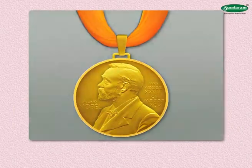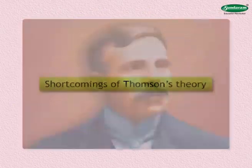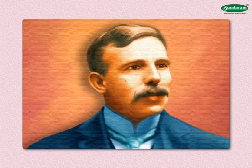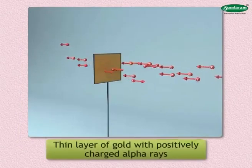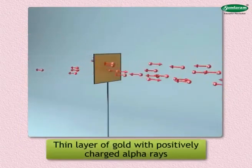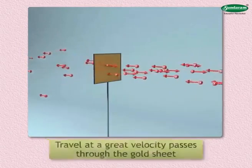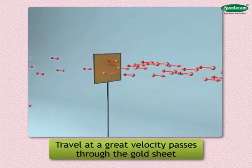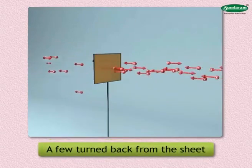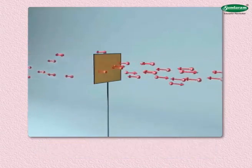Although Thompson's theory explained why an atom is neutral, it was incomplete in other ways. To better understand the shortcomings of Thompson's theory, Ernest Rutherford conducted an experiment. In his experiment, Rutherford bombarded a very thin layer of gold with positively charged alpha rays. He found that most of these rays, which travel at great velocity, passed through the gold sheet without encountering any obstacles.